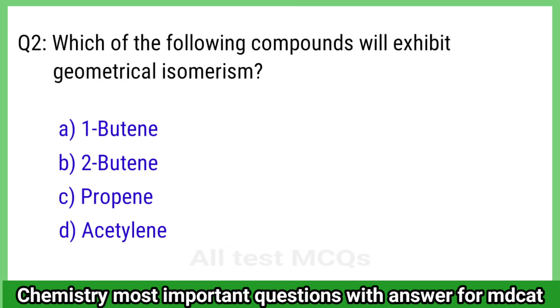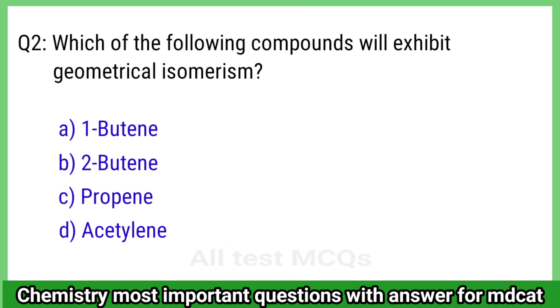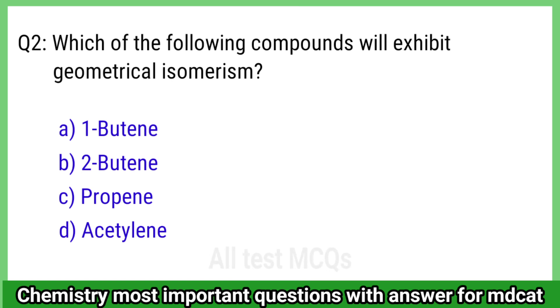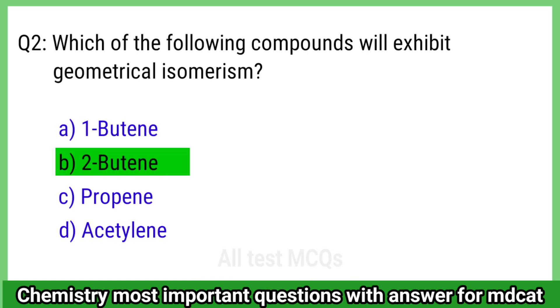Question 2: Which of the following compounds will exhibit geometrical isomerism? The right answer is option B, H2O2.